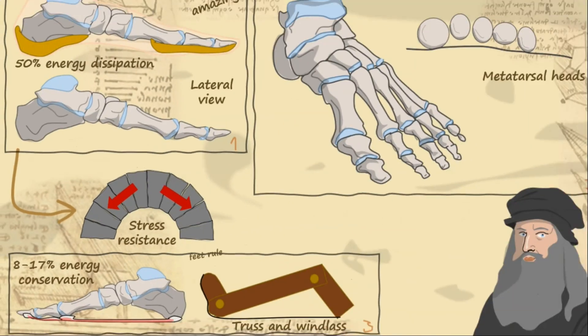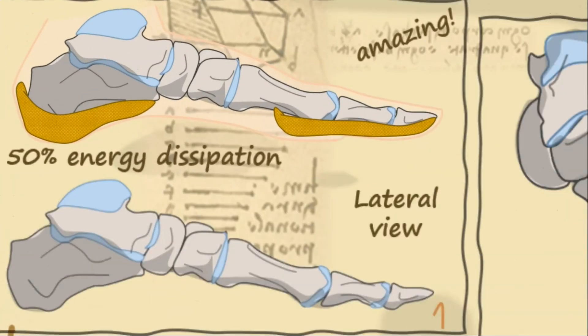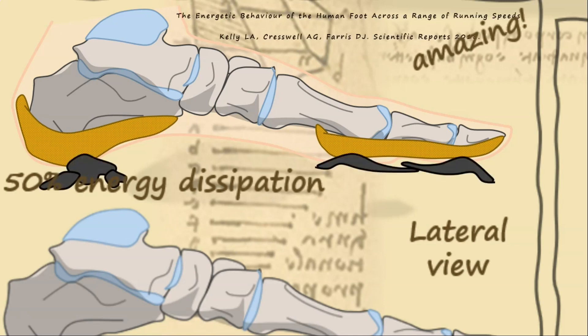In addition to the stress reduction properties of the tarsal arch, the foot also has properties that dissipate energy before it can even reach the bones. An example of how the foot does this is through the use of plantar fat pads in the heel and forefoot.